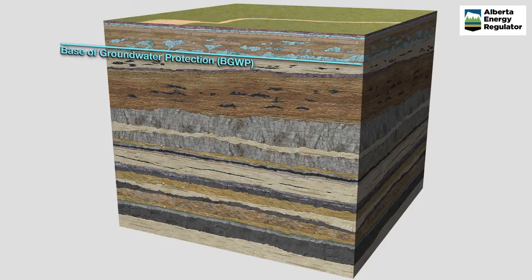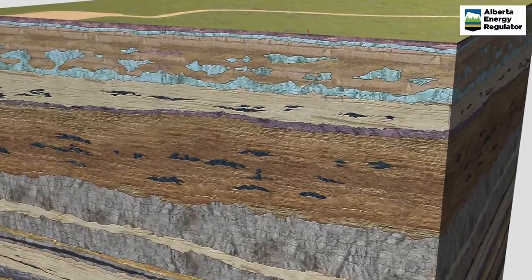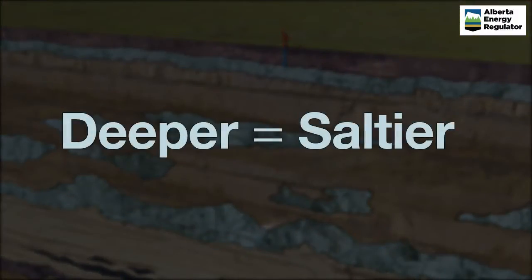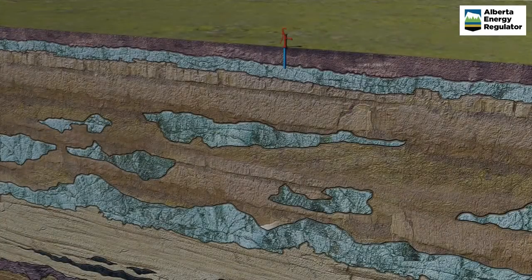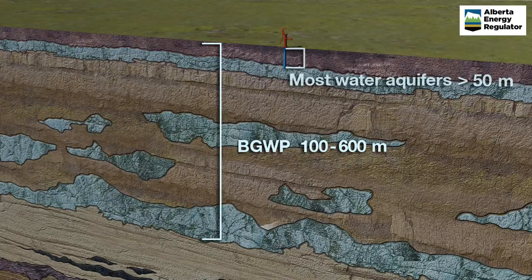Groundwater that is used for human consumption is found at relatively shallow depths. Protecting this resource is important. The base of groundwater protection is characterized not so much by depth, but rather the salt content of the groundwater. The general rule is, the deeper you go, the saltier the water becomes. In Alberta, the base of groundwater protection is found at between 100 and 600 meters, depending on the area of the province. It is established where the groundwater contains 4,000 milligrams per liter of total dissolved solids. Most water wells draw from aquifers at depths of less than 50 meters, which is far above the base of groundwater protection. This means that the groundwater Albertans drink is sourced hundreds or thousands of meters above most of the rock formations being targeted using horizontal wells and hydraulic fracturing.